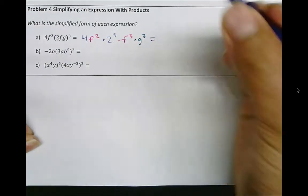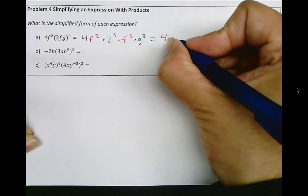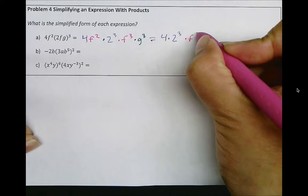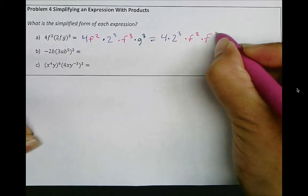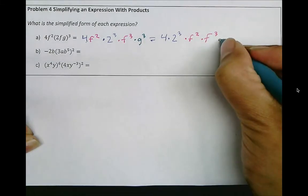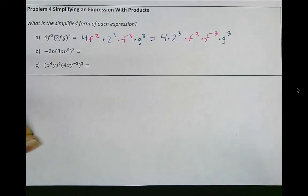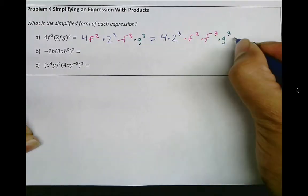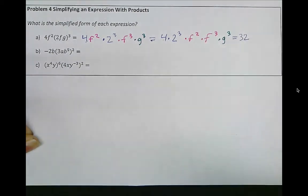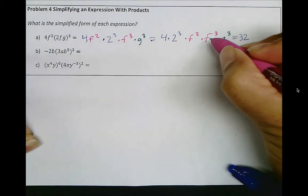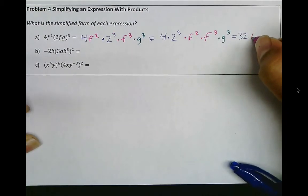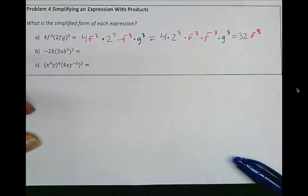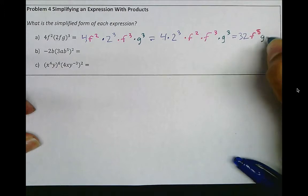We will rearrange these. Let's keep the 4 with the 2 to the power of 3. We'll write the f's together, so that's f squared times f cubed, and lastly the g times g to the power of 3. Now, 2 to the power of 3 is 8, so that's 8 times 4, which is 32. f to the power of 2 times f to the power of 3 can be simplified by adding exponents, giving us f to the power of 5. And lastly, we just bring over the g to the power of 3.